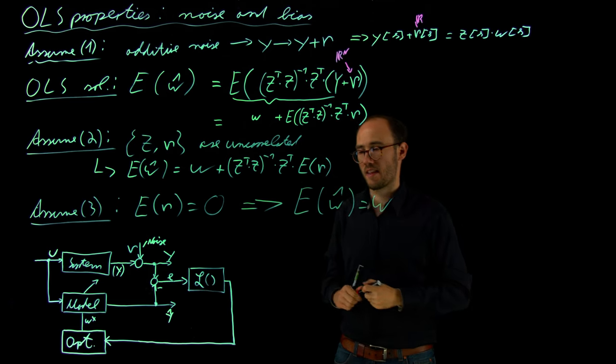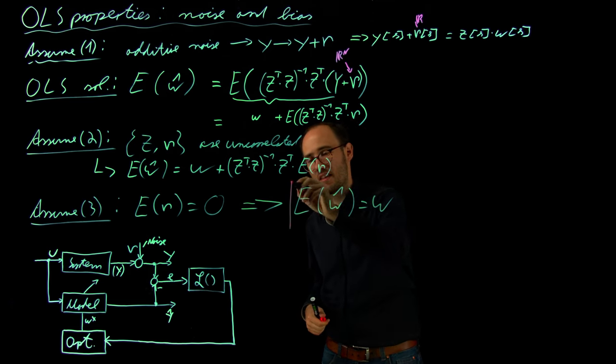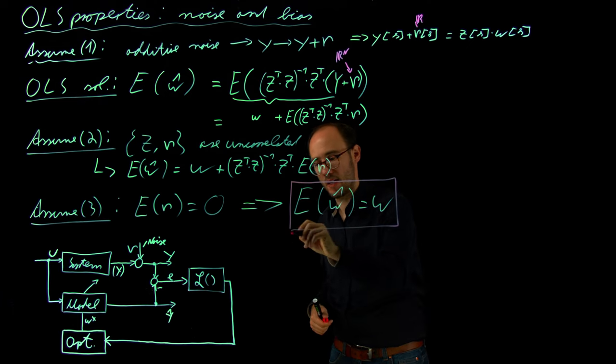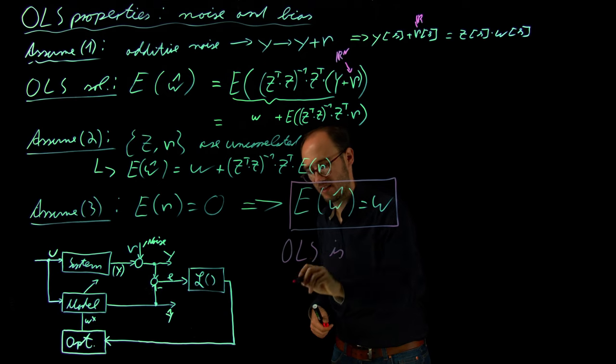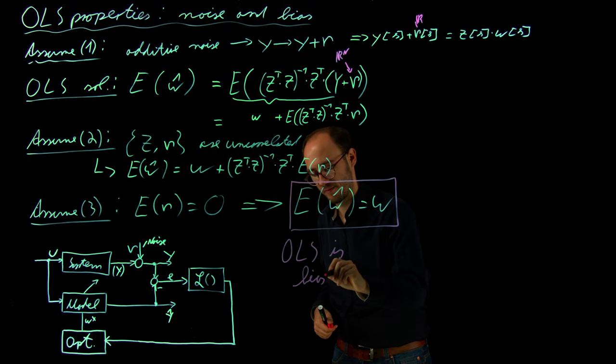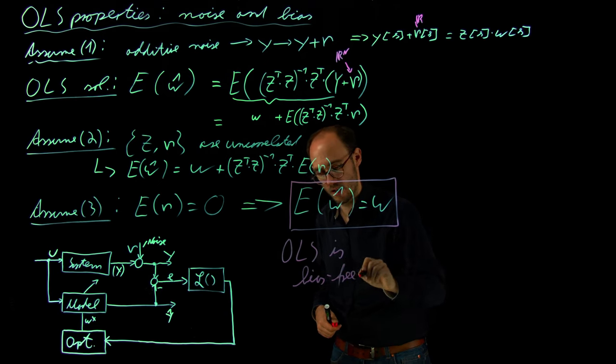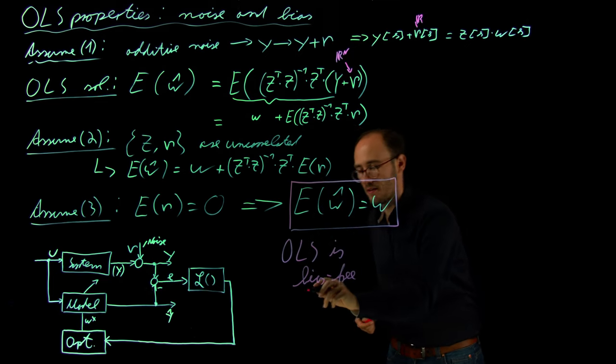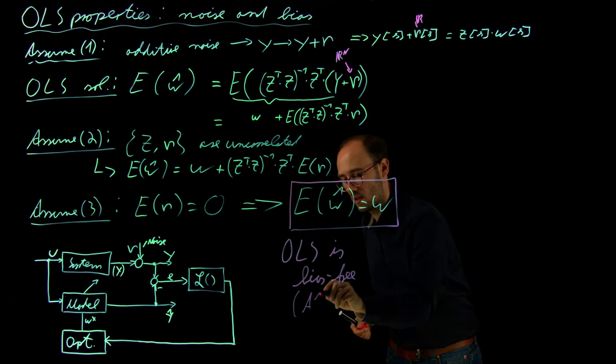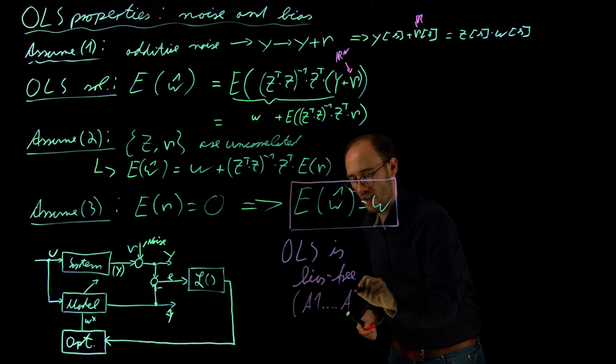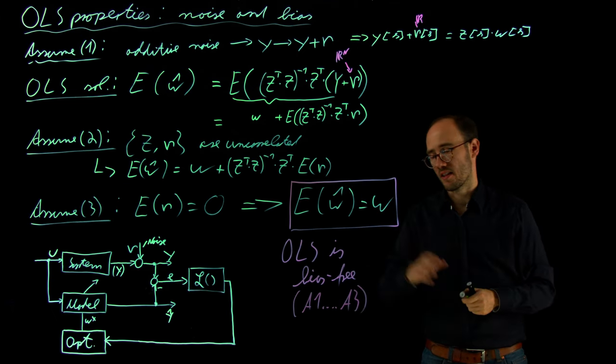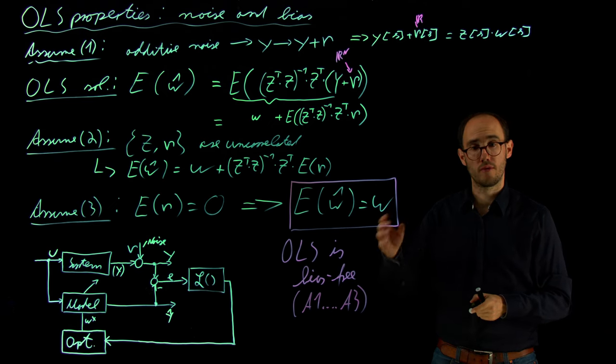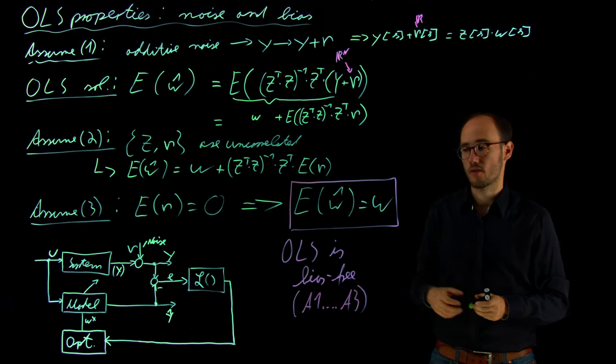And based on this assumption, it follows that the expectation of W hat is actually W. And that means that the OLS estimator is bias free. Of course, if the assumptions A1 to A3 apply. In this scenario, we can prove that the ordinary least squares estimator is bias free.